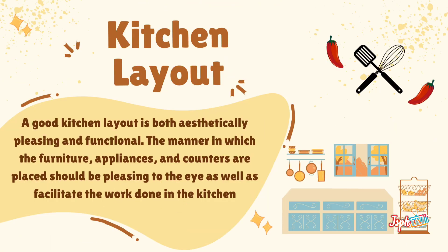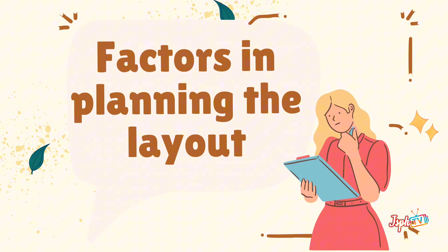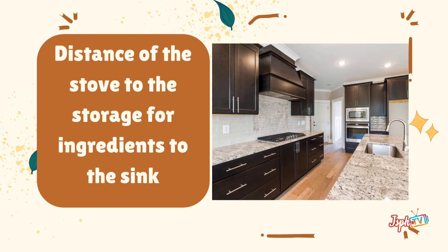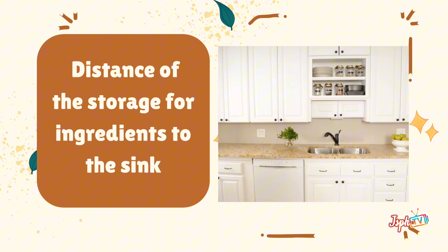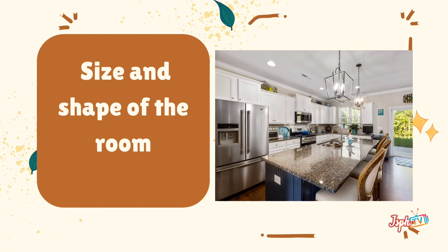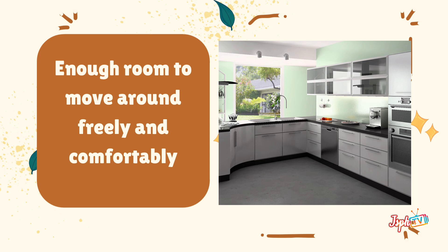For kitchen layout, a good kitchen layout is both aesthetically pleasing and functional. The manner in which the furniture, appliances, and counters are placed should be pleasing to the eye as well as facilitate the work done in the kitchen. Factors in planning the layout include: distance of the sink from the stove, distance of the stove to ingredient storage, ample space for food preparation, size and shape of the room, and enough room to move around freely and comfortably.